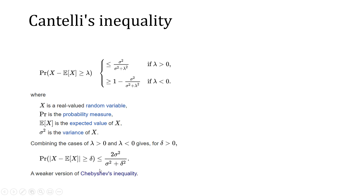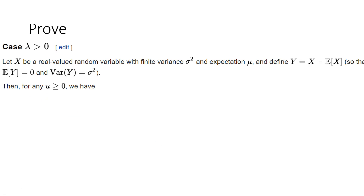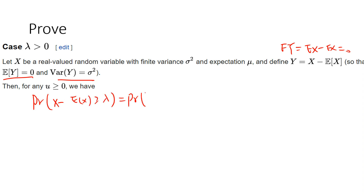Let me provide some details. When λ is greater than zero, we define Y = X minus the expectation of X, so that E[Y] equals zero and the variance remains σ². This is because E[Y] = E[X] − E[X] = 0. For any u greater than zero, the probability that X minus E[X] is greater than λ equals the probability that Y ≥ λ, which is the same as the probability that Y + u ≥ λ + u.